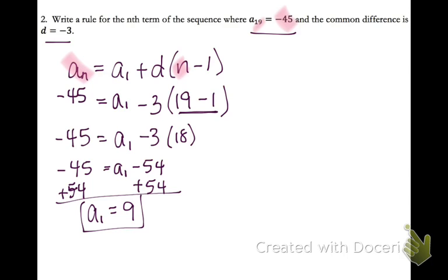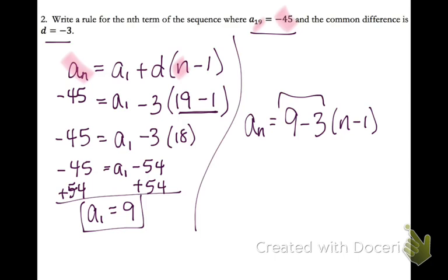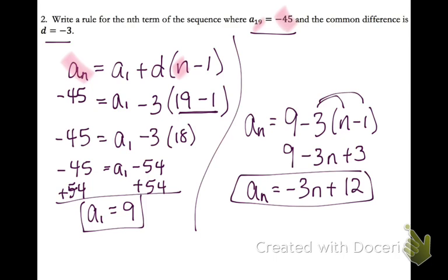So now I can write my rule. A sub n equals my first term minus 3 times n minus 1. Now make sure that don't ever add or subtract these together first. What comes first is always going to be distributing whenever we're simplifying these. Then you can combine like terms. And there's my rule.